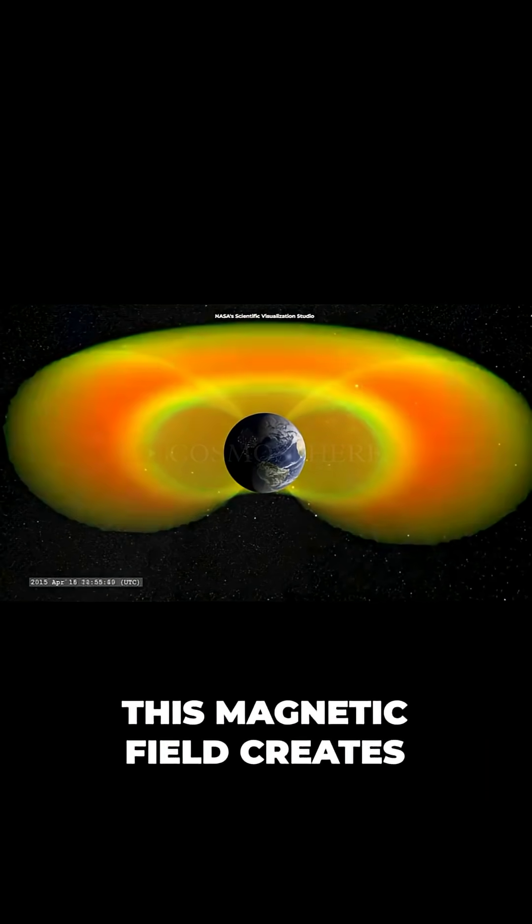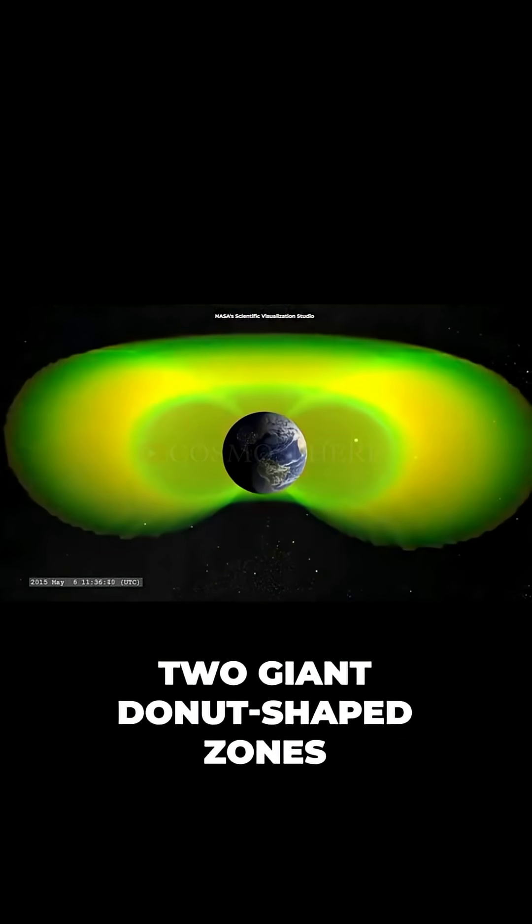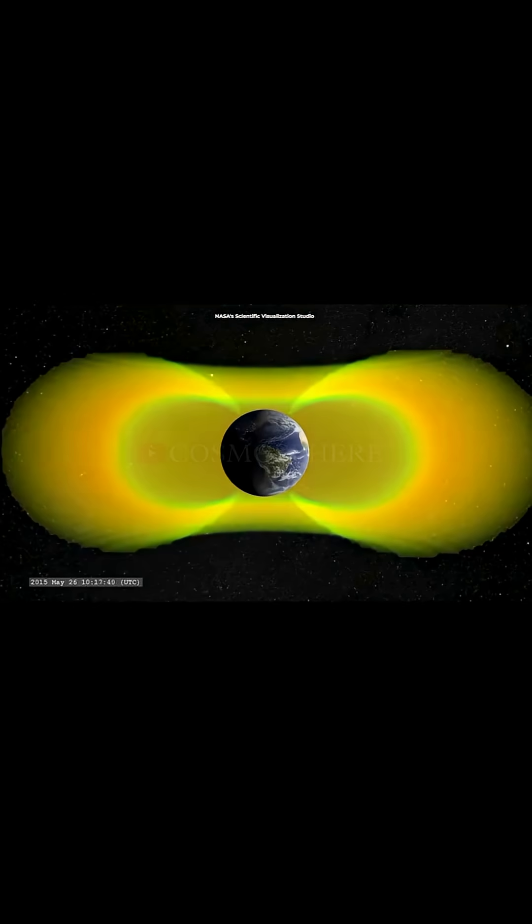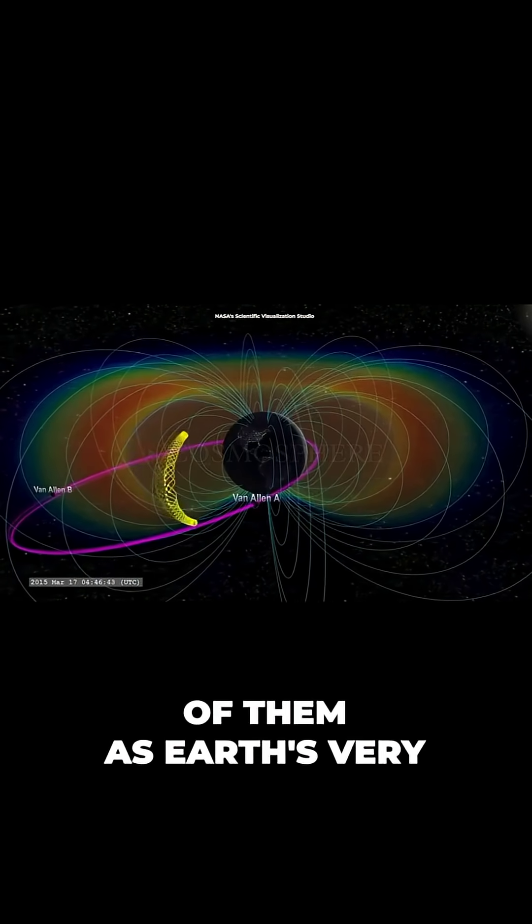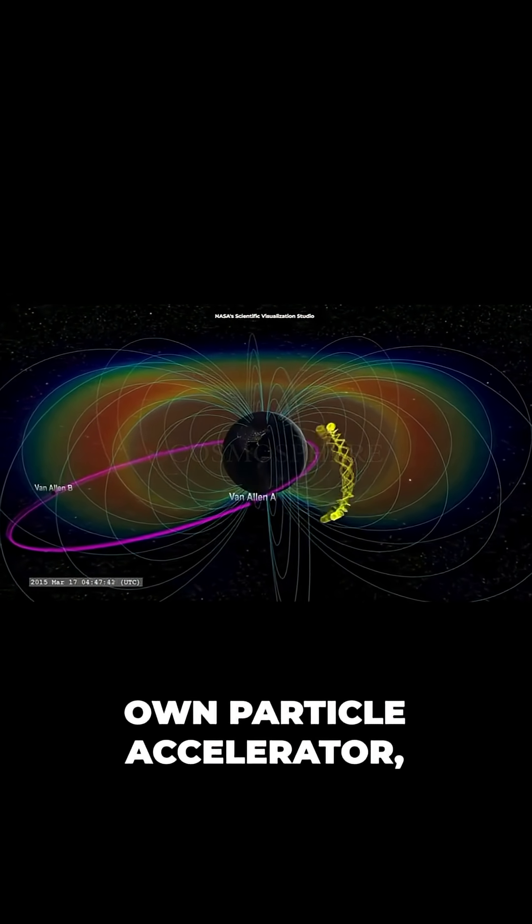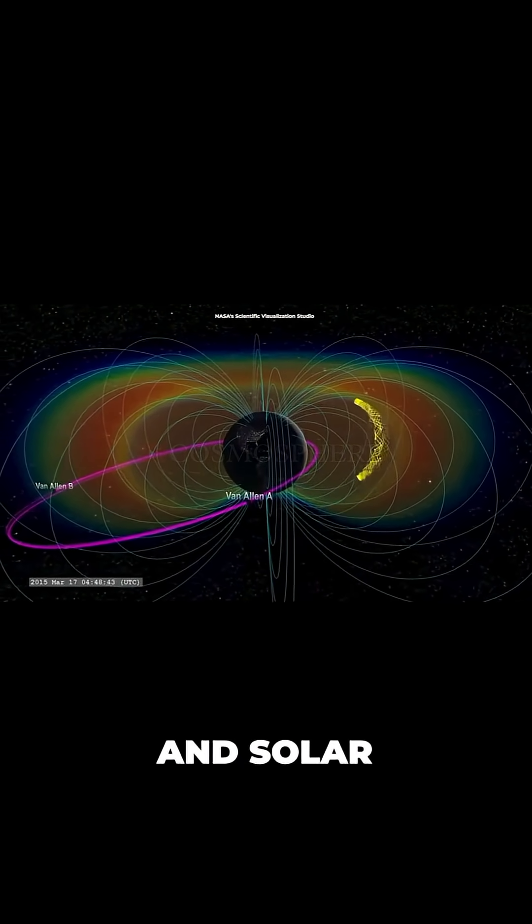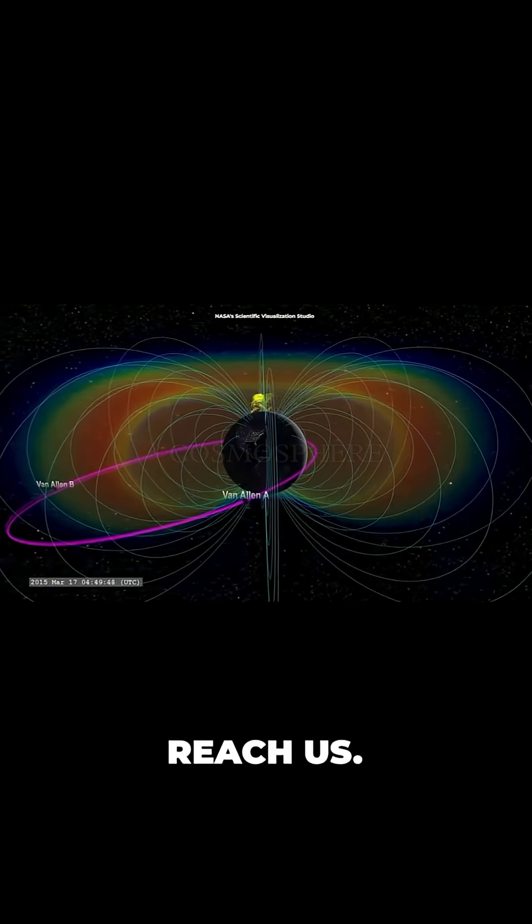This magnetic field creates two giant donut-shaped zones called the Van Allen Belts, which trap harmful radiation from space. Think of them as Earth's very own particle accelerator, catching cosmic rays and solar particles before they can reach us.